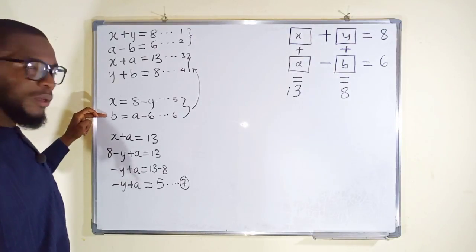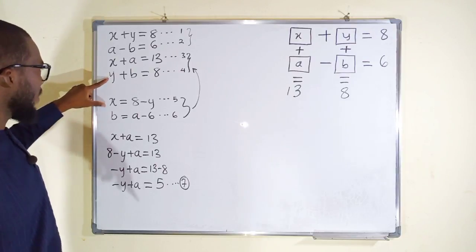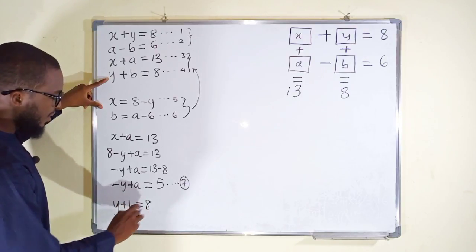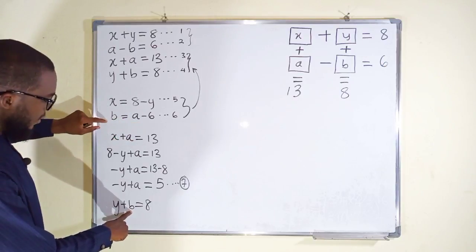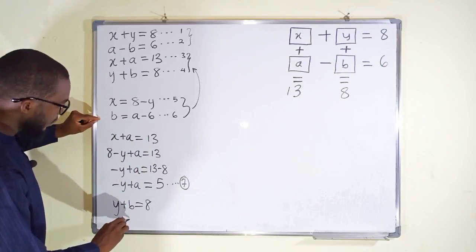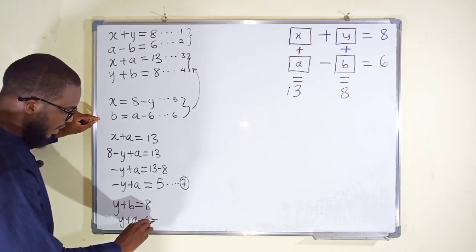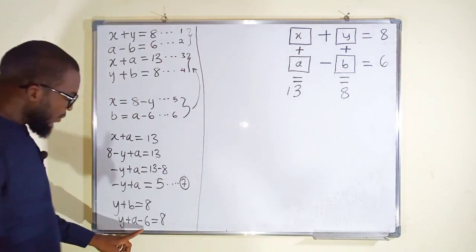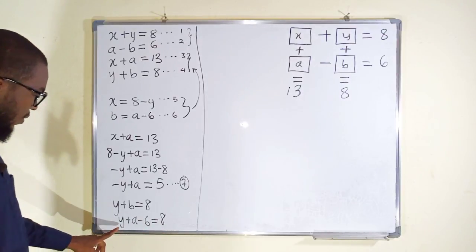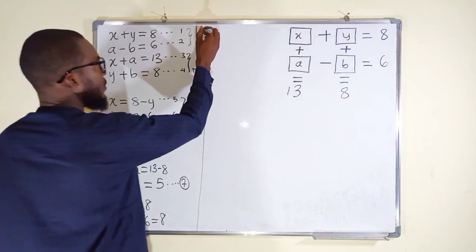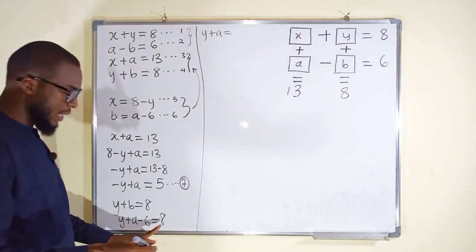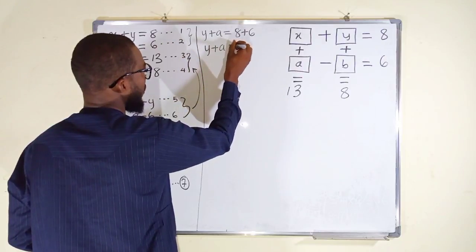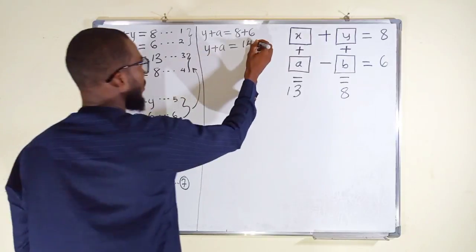Now let us substitute into equation 4. In equation 4 we have y plus b equals 8, but b from equation 6 is a minus 6. So instead of b we write a minus 6, giving us y plus a minus 6 equals 8. Taking the constant to the right, y plus a equals 8 plus 6, which gives y plus a equals 14. I'll call this equation 8.